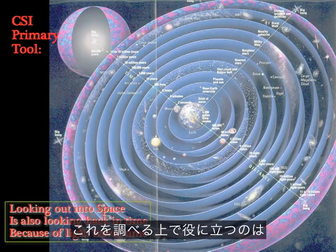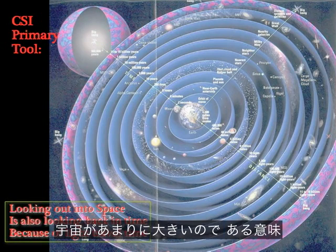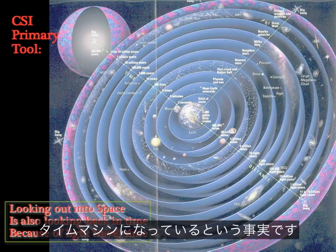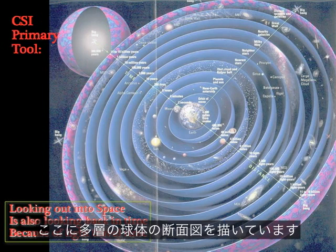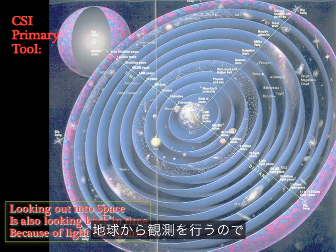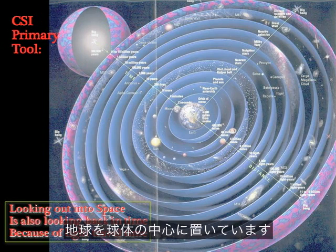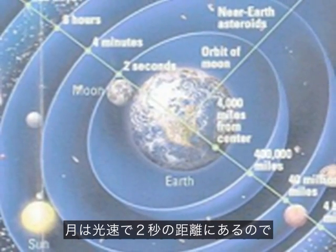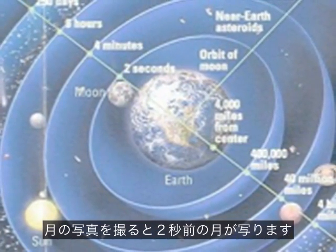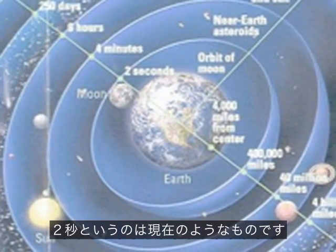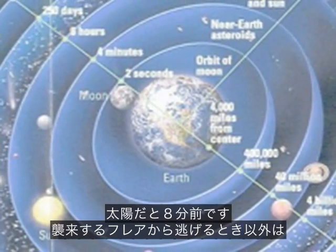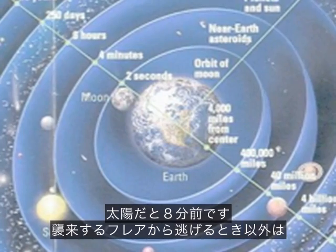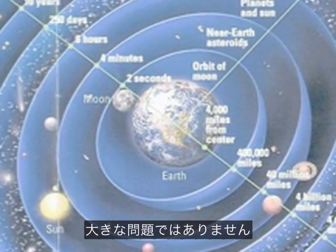We have a tool that helps us in this study — the fact that the universe is so incredibly big that it's a time machine in a certain sense. We draw a set of nested spheres, cut away so you can see them, putting the Earth at the center just because that's where we're making observations. The moon is only two seconds away, so a picture of the moon is the moon two seconds ago — basically the present. The sun is eight minutes ago, which isn't such a big deal unless a solar flare is coming and you want to get out of the way.